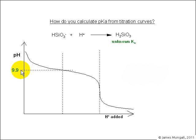So therefore, the point when the solution had the same amount of HSiO3 minus and H2SiO3, that pH was 9.9. And we can say that the pKa of that weak acid, H2SiO3, is the same as 9.9.